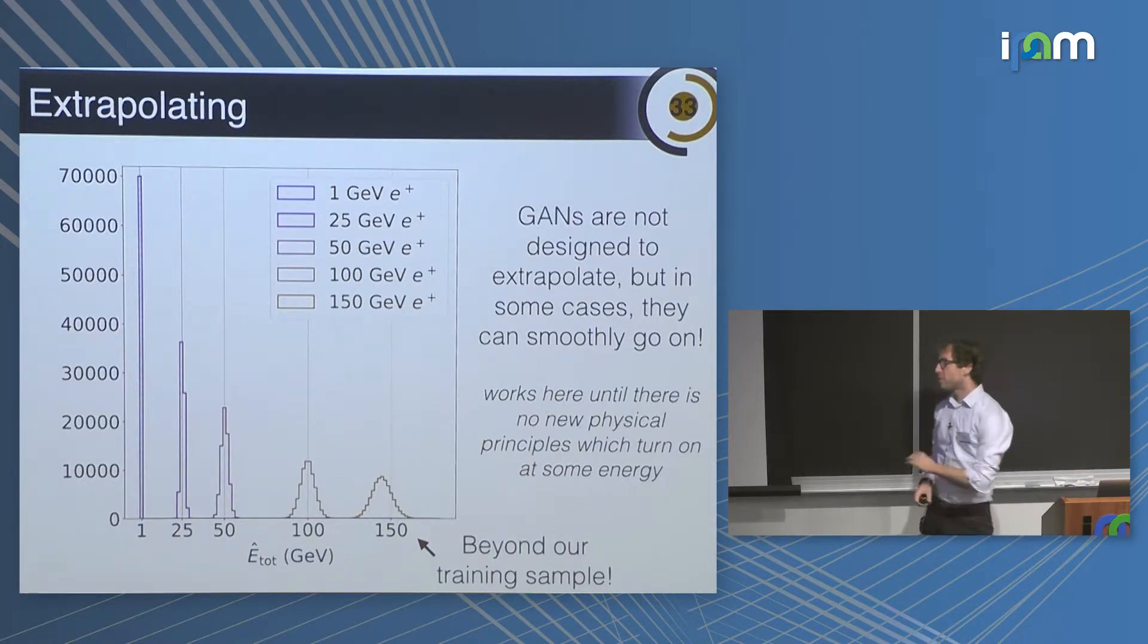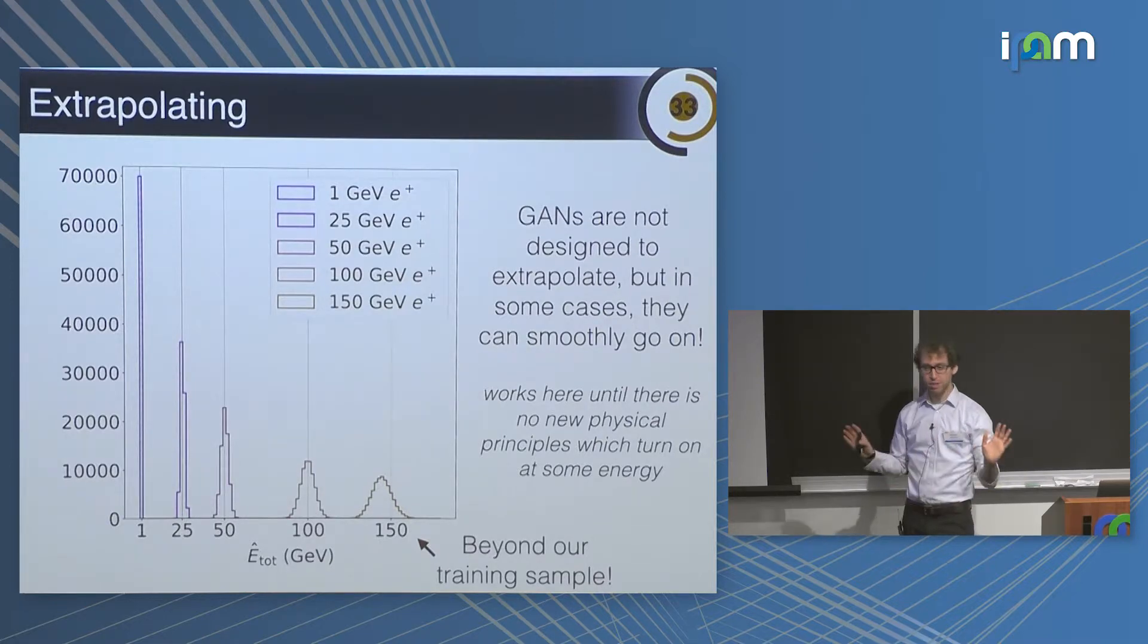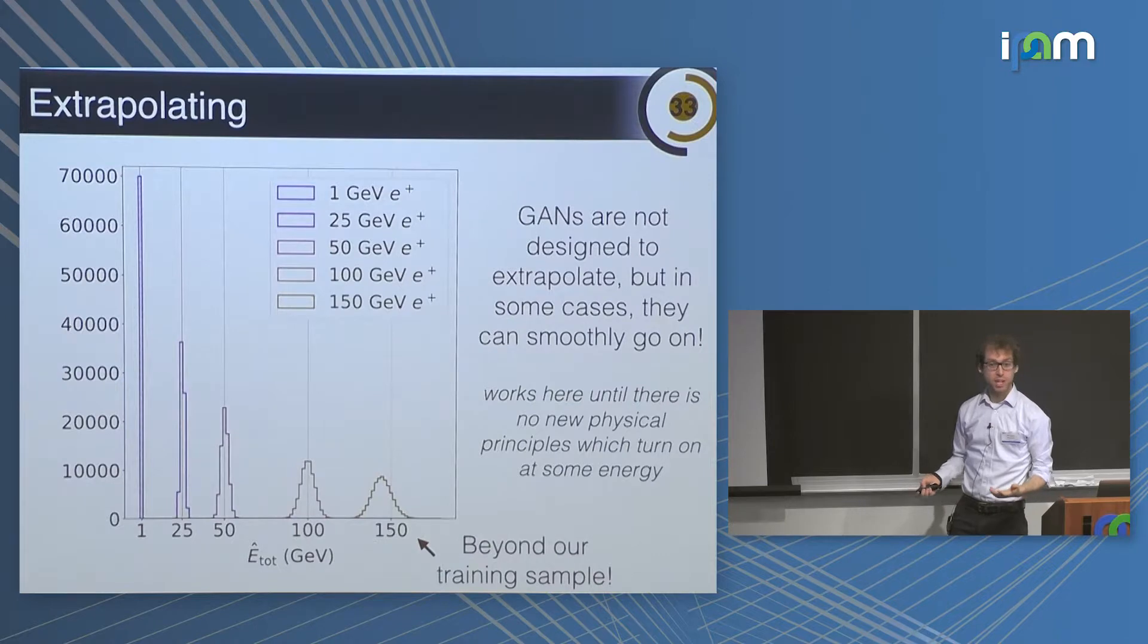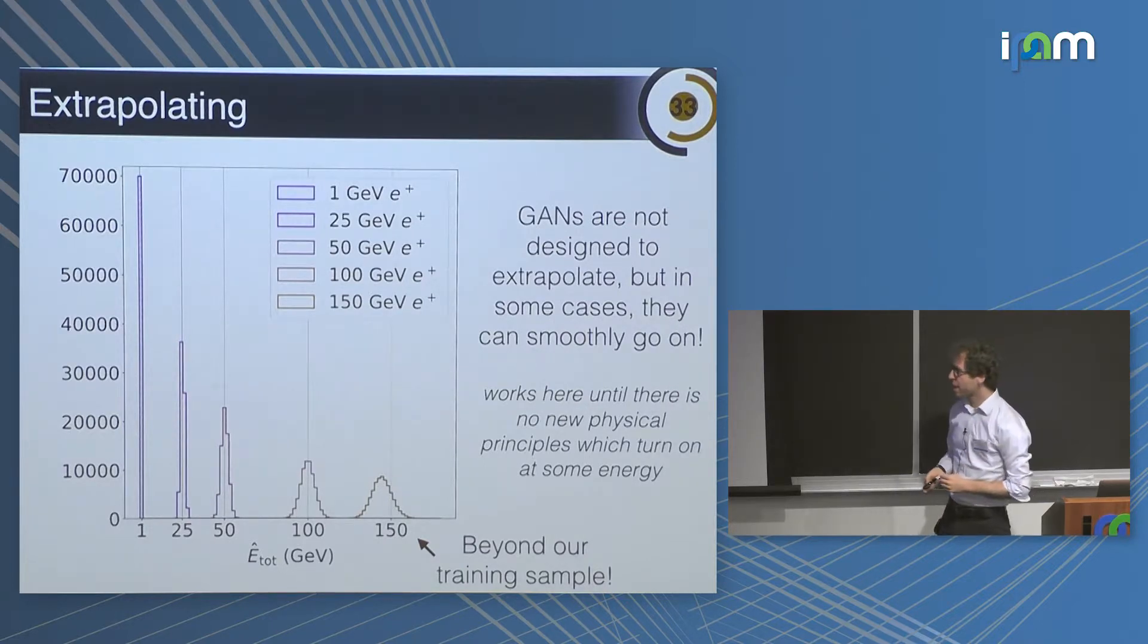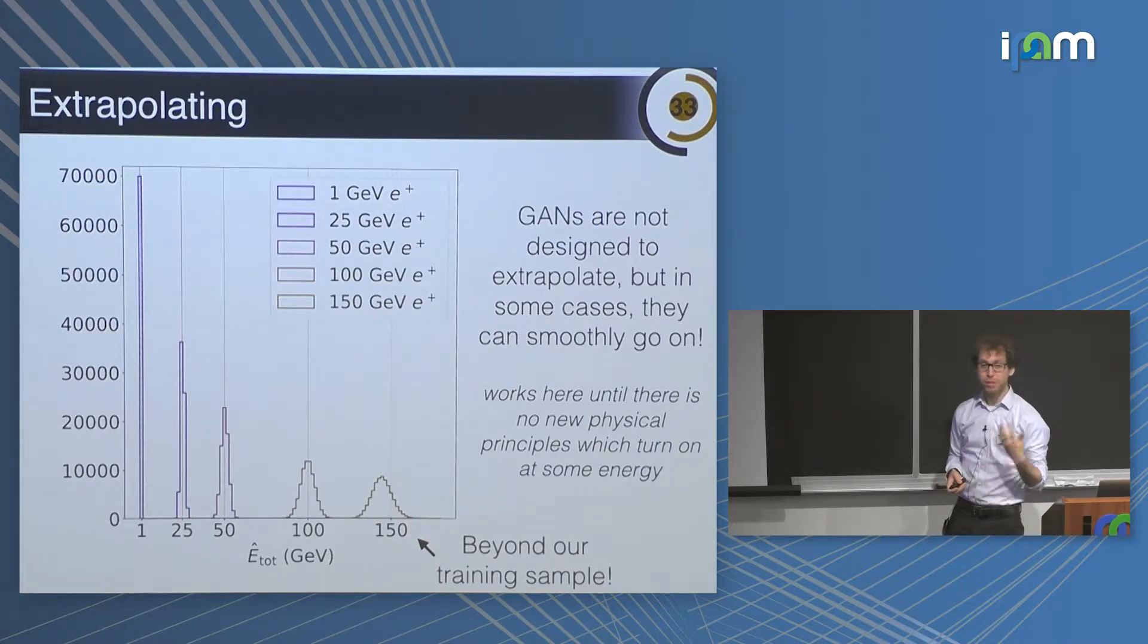I'll say one thing about extrapolation. So GANs are not good at extrapolation, they're very good at interpolation. But in this model, there's no reason why you can't query something outside the data set. In particular, we trained with energies between one and a hundred, and you can just ask, give me 150 GeV particle. And it does an okay job. So it seems to know that it should still conserve energy. And so the GAN will happily smoothly go on. This is of course not applicable if the physics changes once you go beyond the regime of validity. But it's kind of cool to see that you can query things outside and it's not totally crazy.